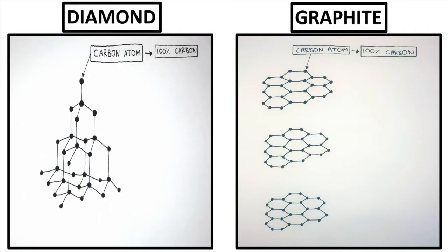Both substances are made of carbon, 100% carbon, with strong covalent bonds between the carbon atoms. However, it's very clear to see diamond and graphite have different structures.